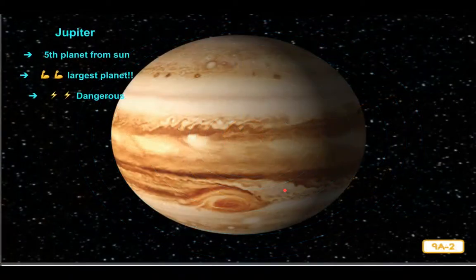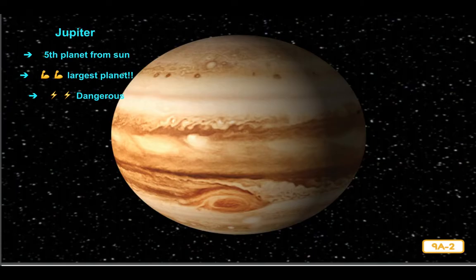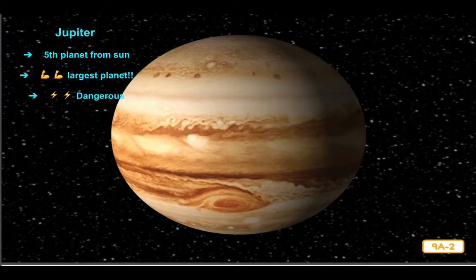The planet Jupiter is the fifth planet from the Sun. In Roman mythology, Jupiter was the king of the gods — the strongest and most powerful of all. The largest planet in our solar system is named after him. Being the largest planet makes Jupiter unique. Jupiter is so big that you could fit about 1,300 planet Earths inside of it.